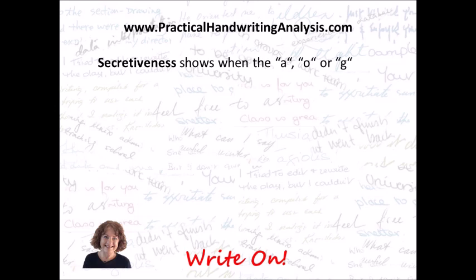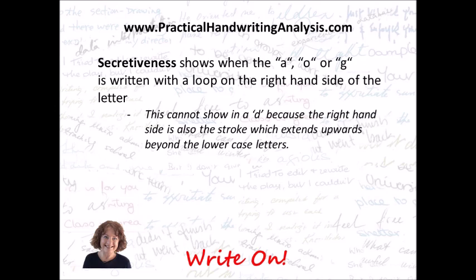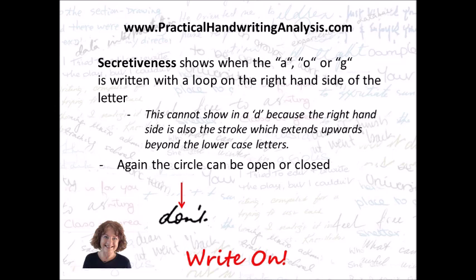Secretiveness shows where the A, O, or G is written with a loop on the right-hand side of the letter. This can't show in a D because the right-hand side is also the stroke which stands upwards beyond the lowercase letters, so not in the D. The circle can be open or closed. There's one shown with the loop in the O on the right-hand side, and the word 'want' with the loop on the right-hand side of the A.